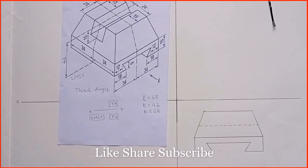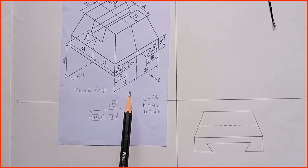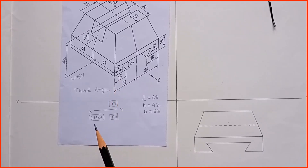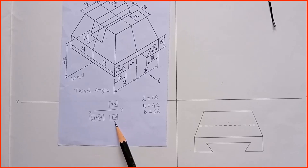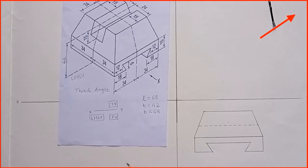Hey guys, welcome back to the channel. In a previous video we drew the front view of this object in a third angle projection system. Now in this video we will draw its top view in third angle projection system. We already derived the relative position of front view, top view, and side view. If your object is in the third quadrant, your front view lies below reference line XY and your top view lies above reference line XY. If you still have confusion, you can view my video on the difference between first angle and third angle projection systems.